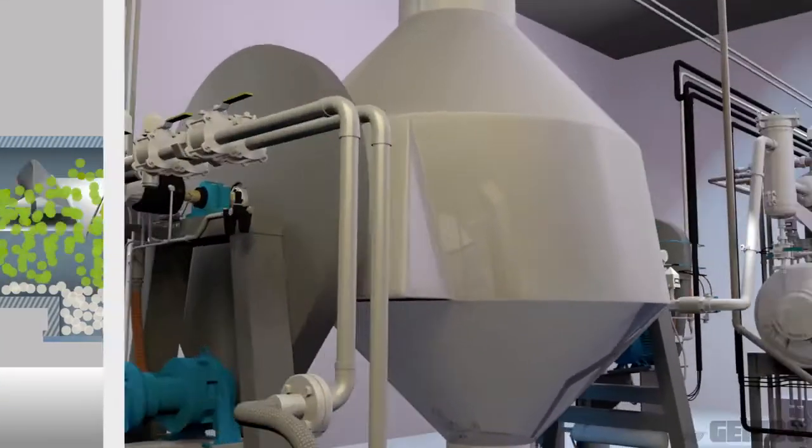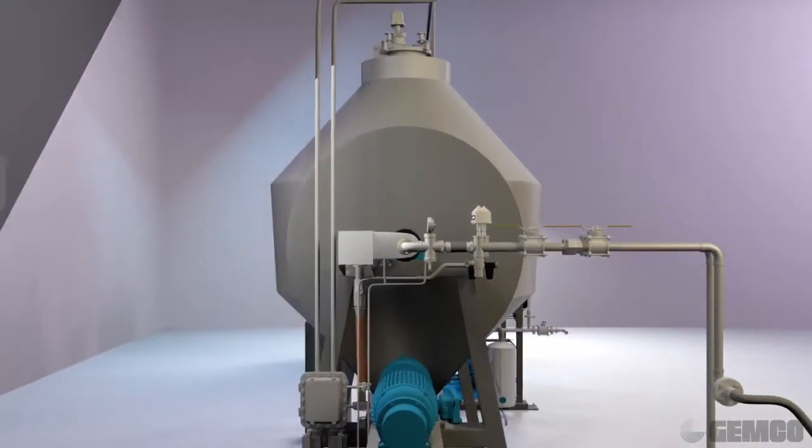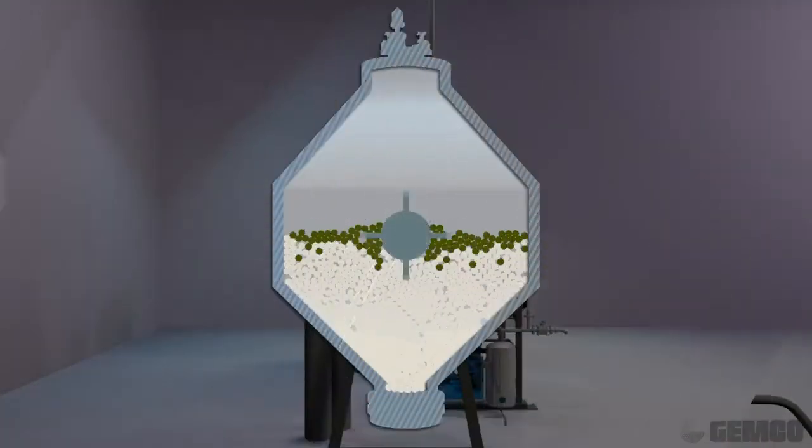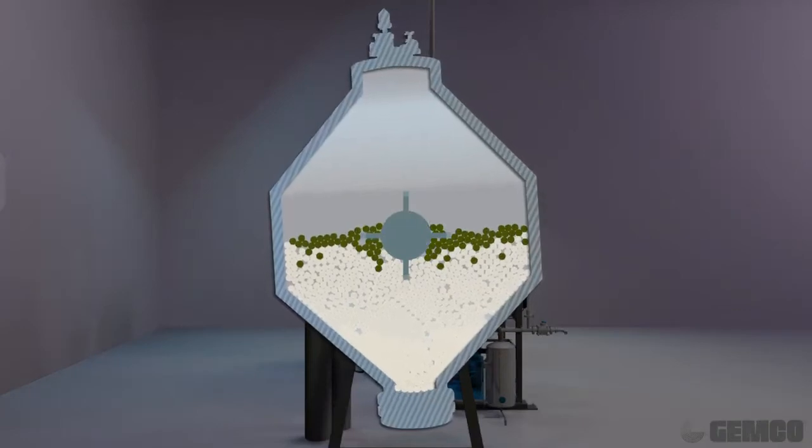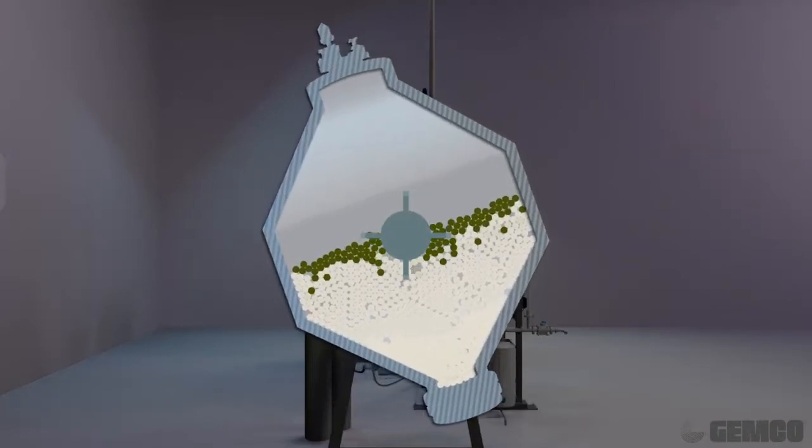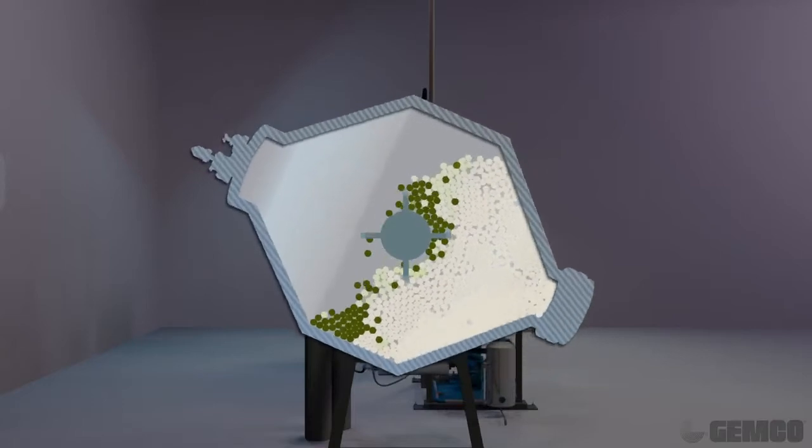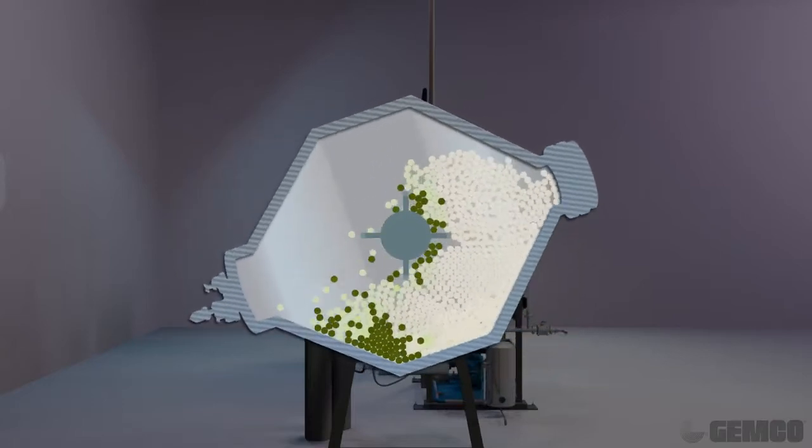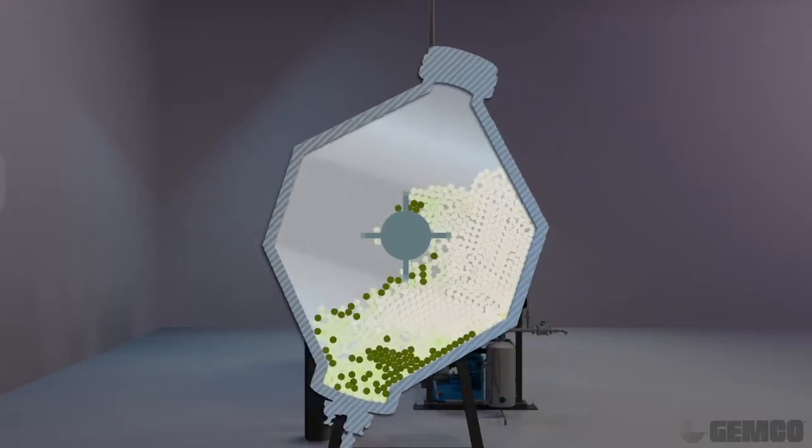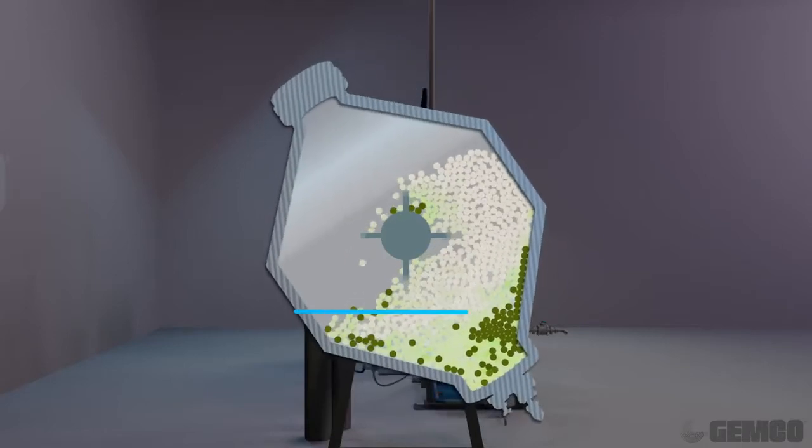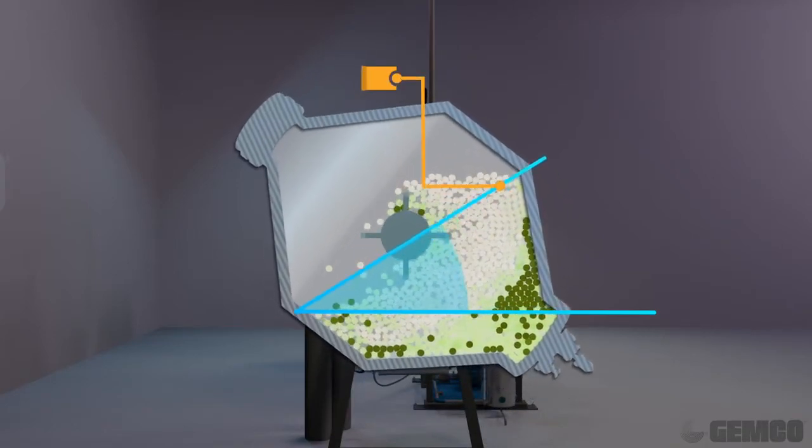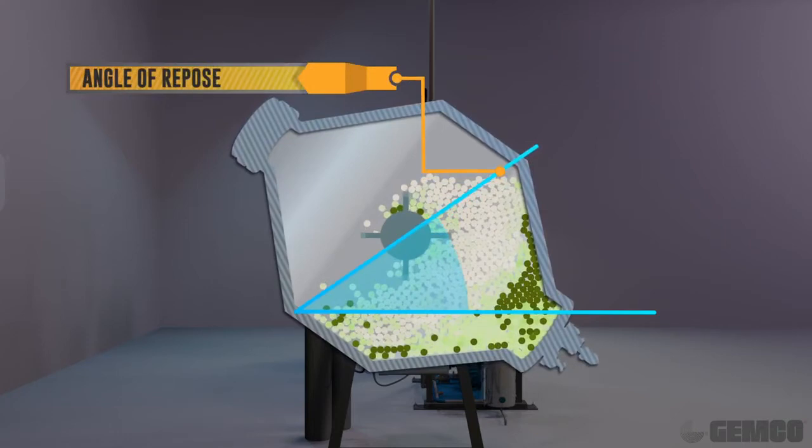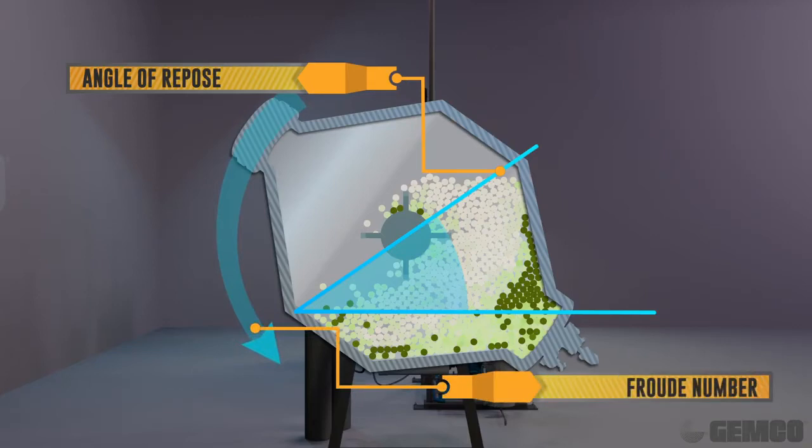In a Jemco tumble blender, our engineers designed a flawless blending system. Let's explore the features of our design in greater detail. The angle at which the material first begins to cascade is referred to as the angle of repose. In a typical blend, the angle of repose is approximated at around 33 degrees. The speed at which the blender turns is called the frowd number. It is half the speed of the centrifugal force. We use gravity and the movement of the particle itself to achieve a homogeneous mix.